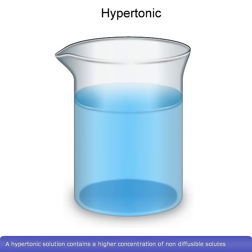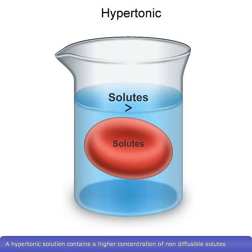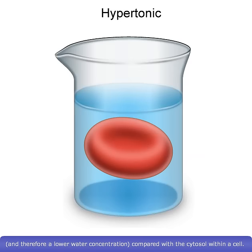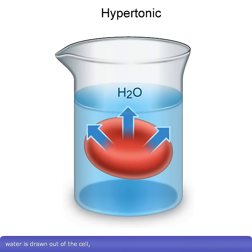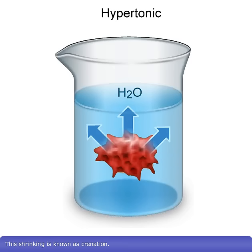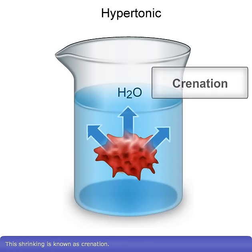A hypertonic solution contains a higher concentration of non-diffusible solutes and therefore a lower water concentration compared with the cytosol within a cell. If a cell is placed in a hypertonic solution, water is drawn out of the cell, causing it to shrink. This shrinking is known as crenation.